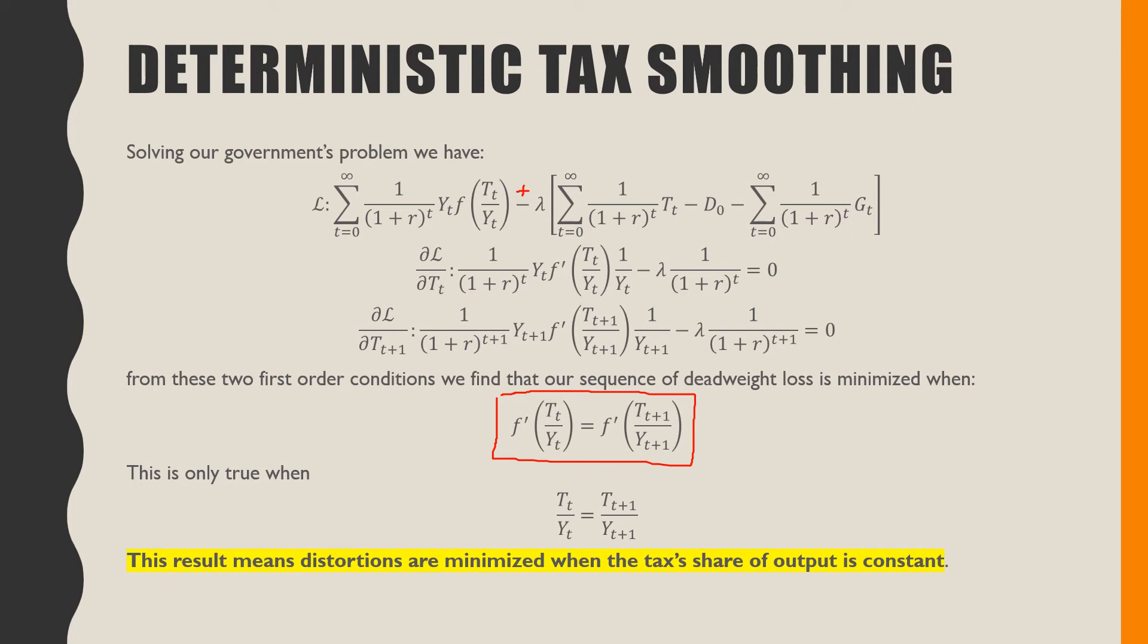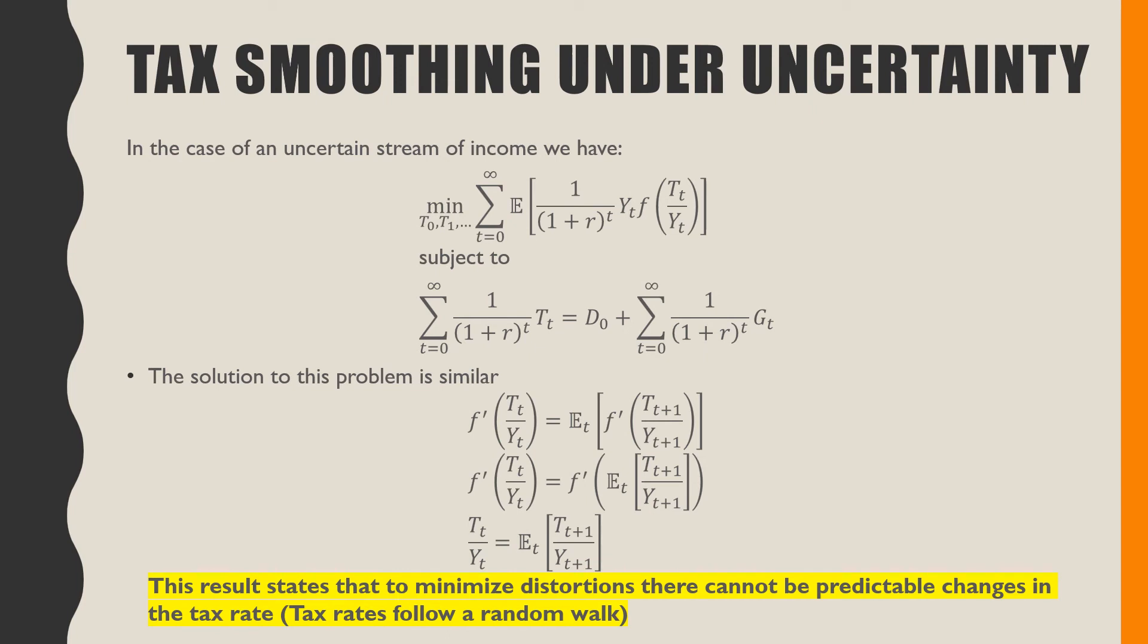When thinking about tax smoothing in an uncertain environment - uncertainty meaning in terms of the stream of income or the stream of output that we have - we're just putting an expectation operator here where Yt now is an uncertain variable and our constraint is the same. The solution to this problem is similar - just plug in the Lagrangian and we get the following result.